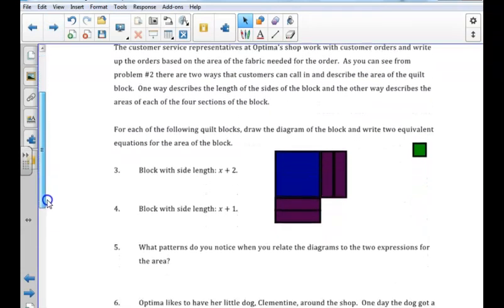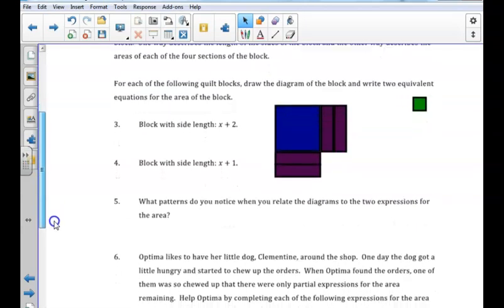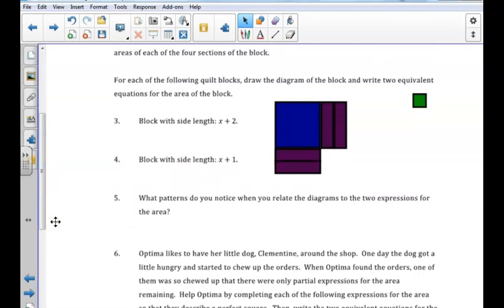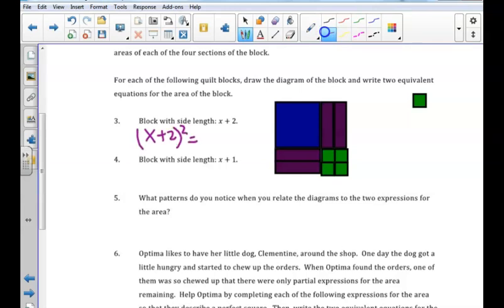We are then given a square with a side length of x plus two and asked to draw a diagram and create an equivalent representation for the area of the square. Since the side length is x plus two, we need to find how many small constant squares we need to add in the corners to make a perfect square. We can place each constant square in the corner—one, two, three, and four. We would need to add four of these green squares to make a perfect square. Therefore, an equivalent form for the area of the square (x + 2)² would be x² + 4x + 4.